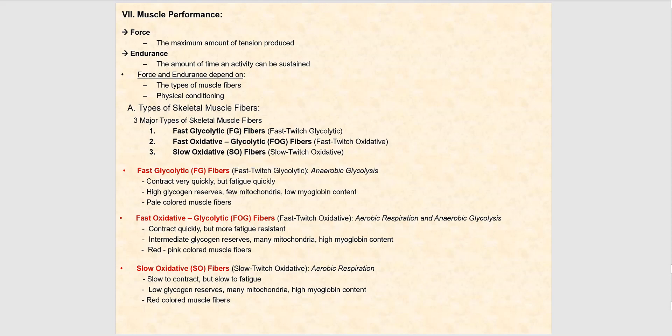How well muscle performs is dependent upon force and endurance. Force is the maximum amount of tension produced by that muscle, and endurance is the amount of time a particular activity can be sustained by those muscles. Force and endurance depend upon the type of muscle fibers and the physical conditioning.